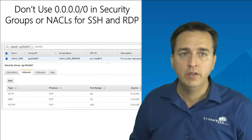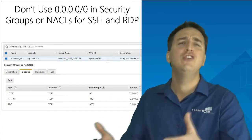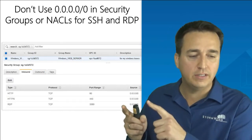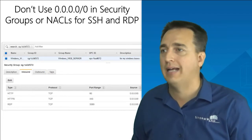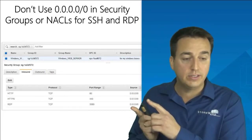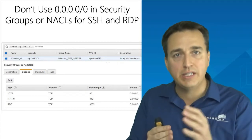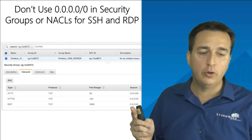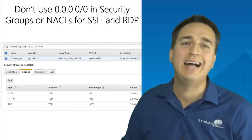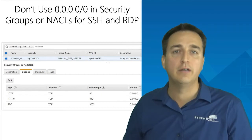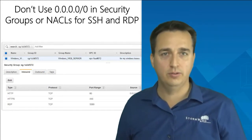If I shrink that source to a specific address range, only devices with a source address in that range can connect via SSH to this EC2 instance — and that user would still need the corresponding private key. We're not completely eliminating the vulnerability because a hacker could spoof the IP address range, but we're reducing it to an acceptable size. Likewise for Windows RDP access on port 3389, reduce the source to only the management network administrators.